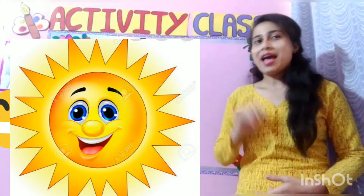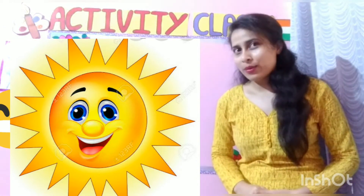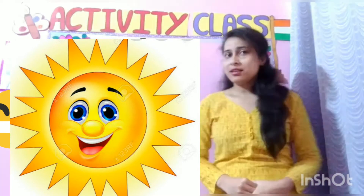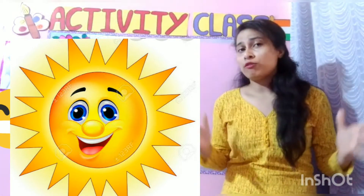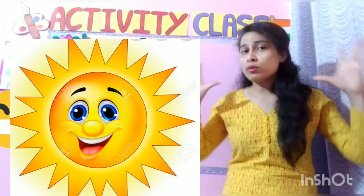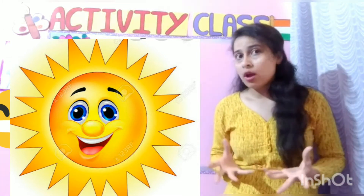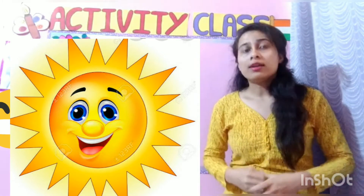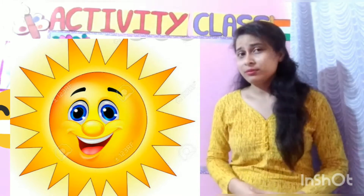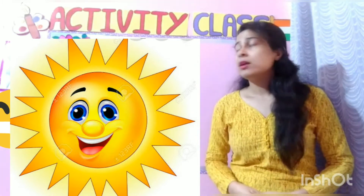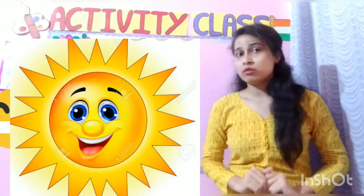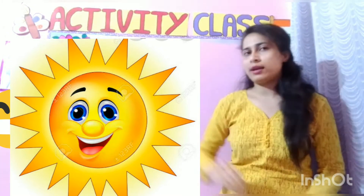Yellow and orange. Children, the sun is a big ball of fire. The sun is a big cloud. It is very hot. It is very far from us.